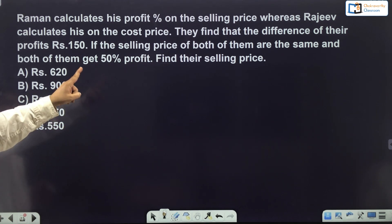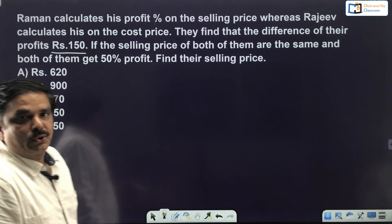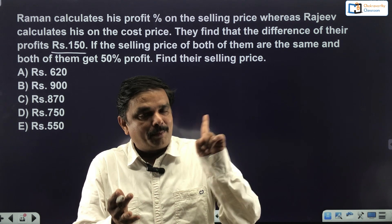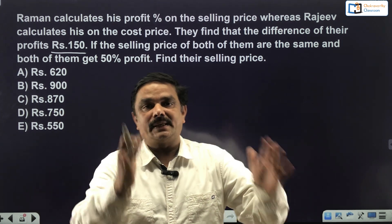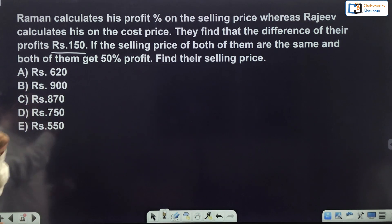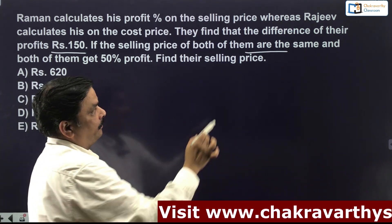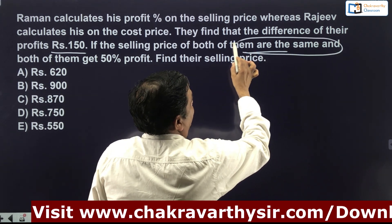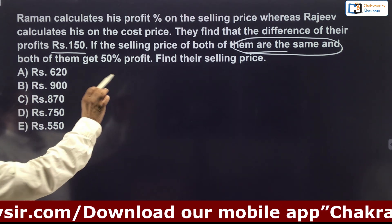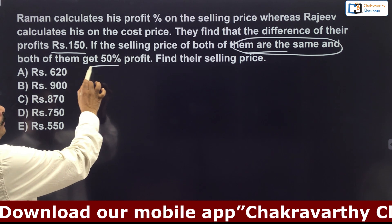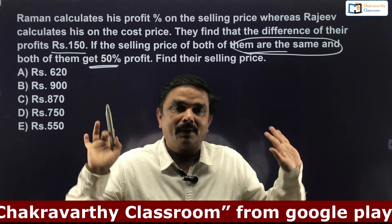The difference of their profits is 150 rupees. One person calculates on cost price, the other on selling price, and the overall difference between both profits is 150. The selling price of both of them is the same — that is very important. And both of them get 50% profit.